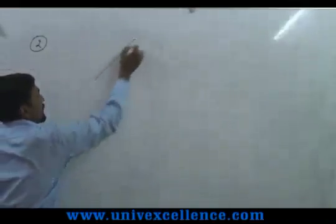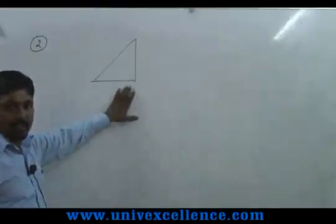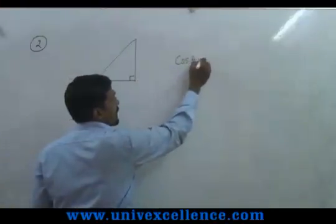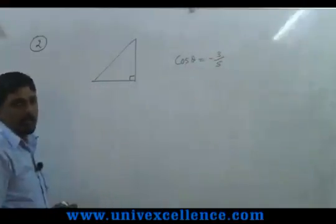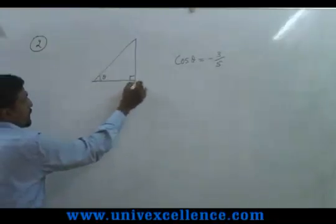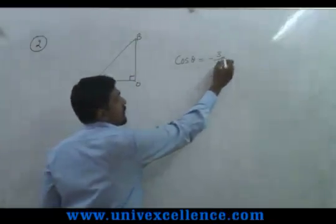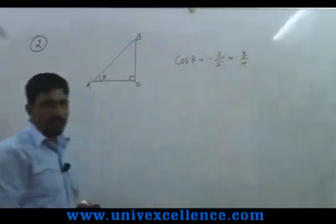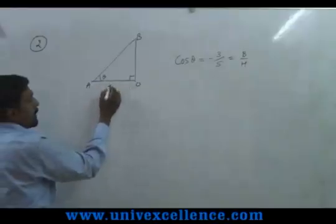Triangle method: as we know that trigonometry is based on right triangles, so take a triangle. Given that cos theta is minus 3 by 5, right? So let us take this as theta. Then cos theta is base upon hypotenuse. So base OA will be 3k.